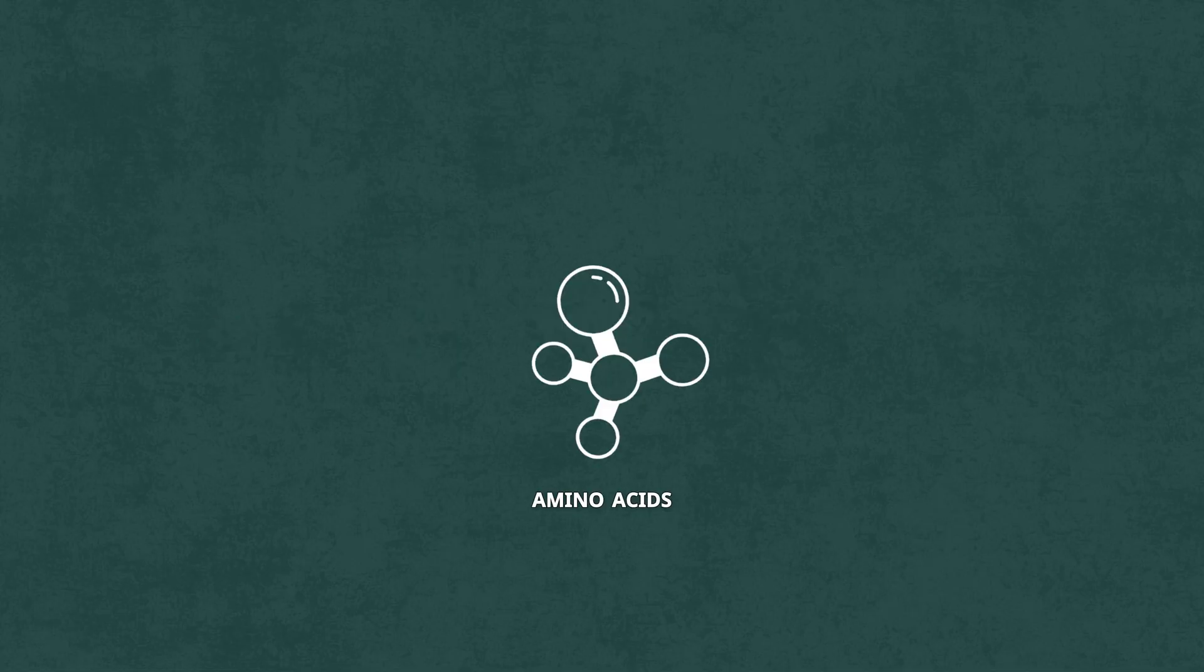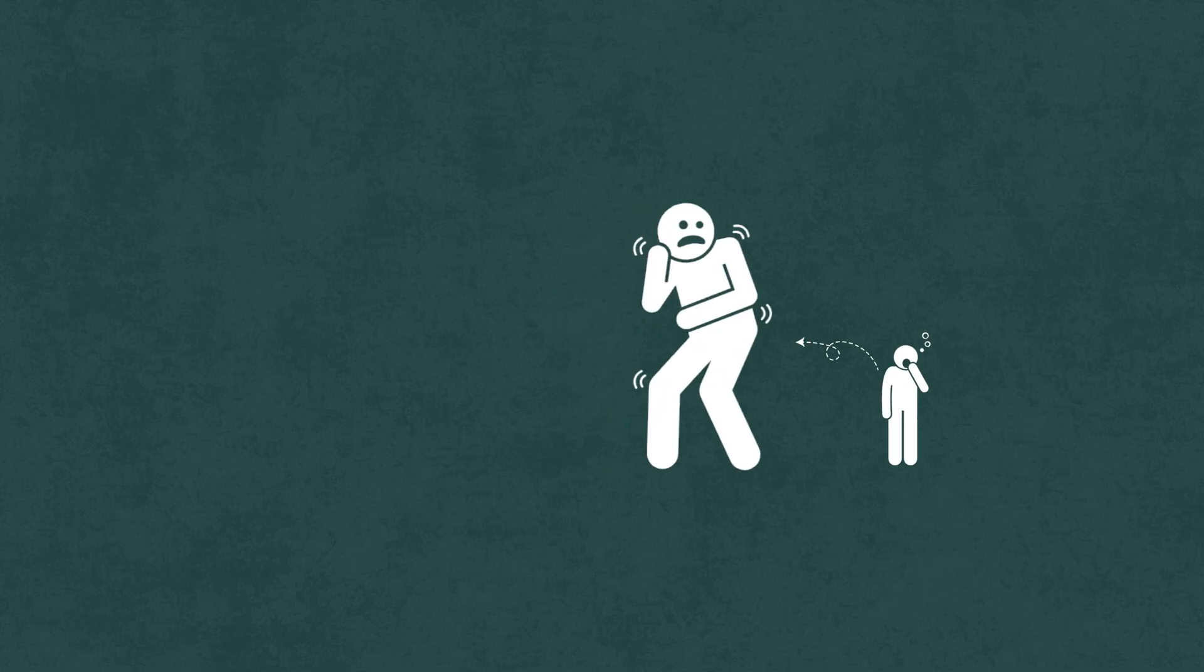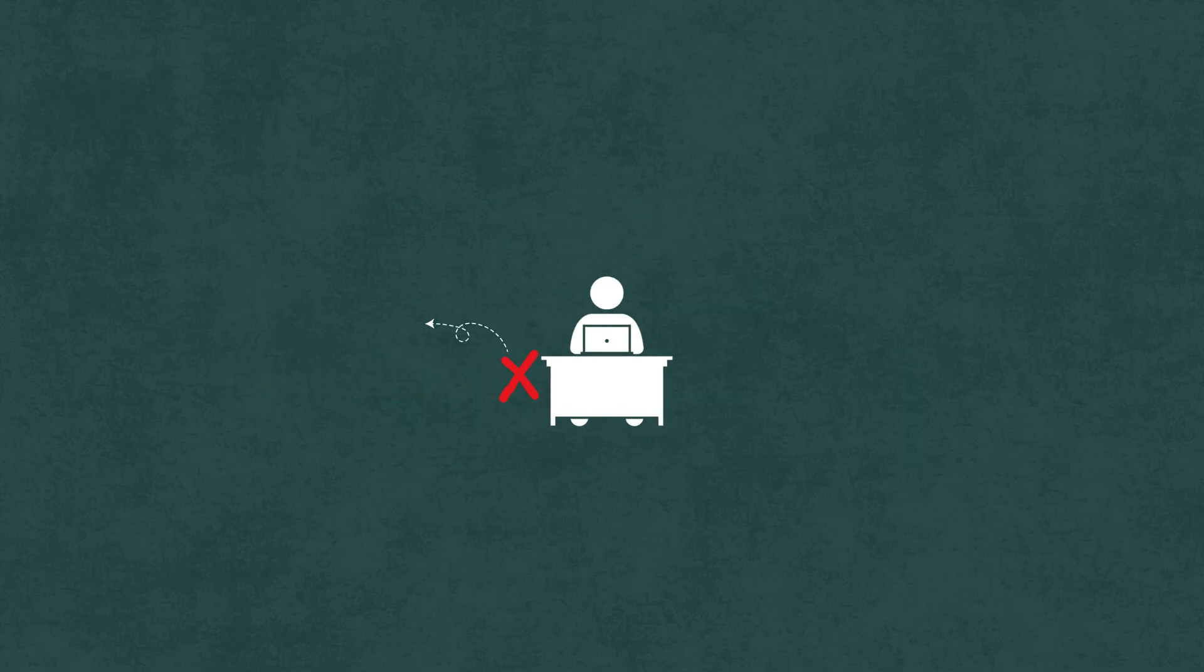Protein gives your brain amino acids like tyrosine and tryptophan, the building blocks for dopamine and serotonin. Without those, your brain starts the day running on fumes. That's why you can feel anxious, foggy, or unfocused before lunch, even if you've had caffeine.